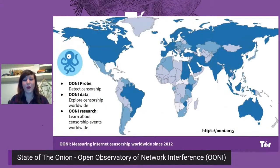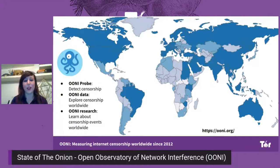Since 2012, we have been developing free and open source software to enable you to independently investigate internet censorship all around the world. And since 2012, we have been openly publishing measurements collected by OONI Probe users in order to increase transparency of internet censorship and enable you to have access to data that can potentially serve as evidence of censorship.